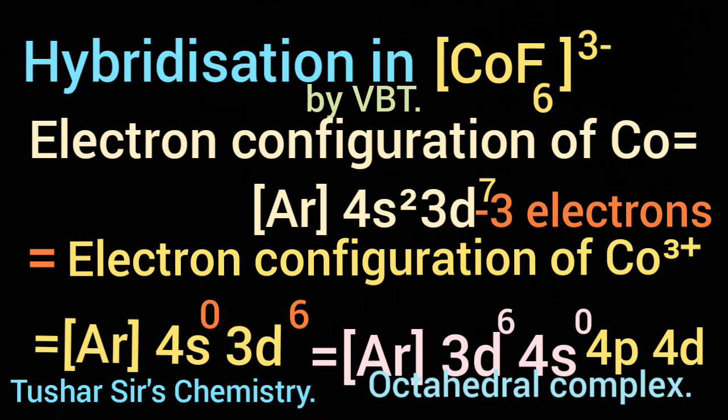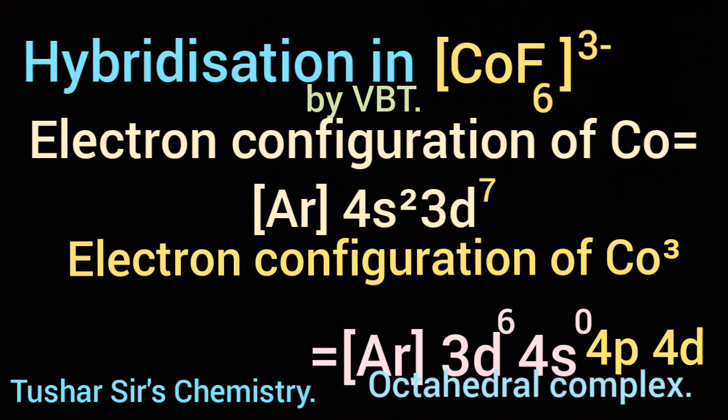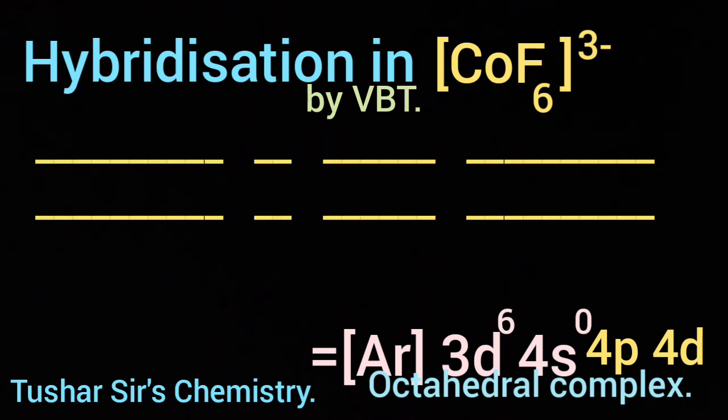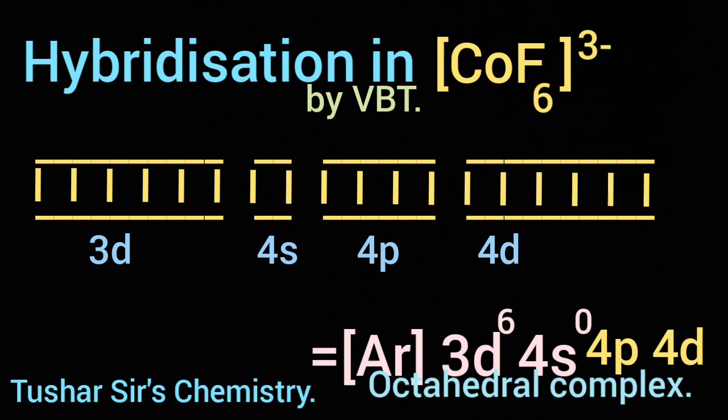Let us write the degenerate orbitals of d subshell and p subshell in form of boxes. In 3d⁶ there are 6 electrons, 4s remains vacant, 4p vacant, 4d vacant.